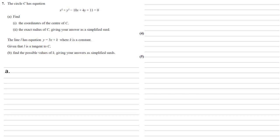Circle C has equation x squared plus y squared minus 10x plus 4y plus 11 equals 0. We need to find the coordinates of the centre of C and the exact radius of C, giving our answer as a simplified surd.